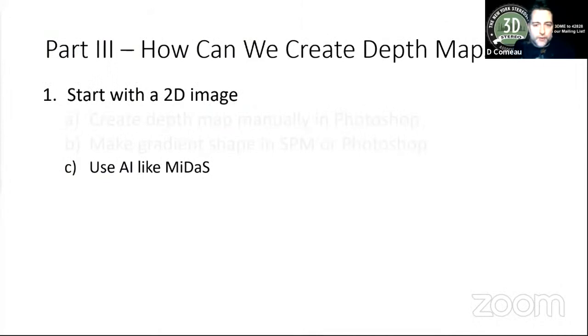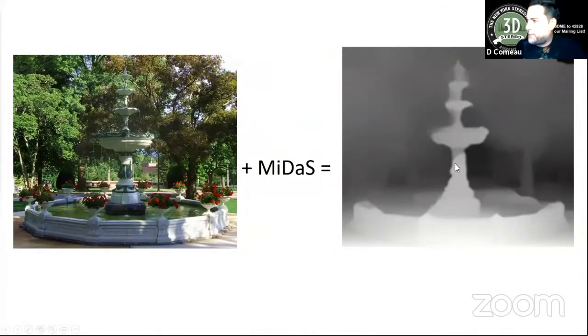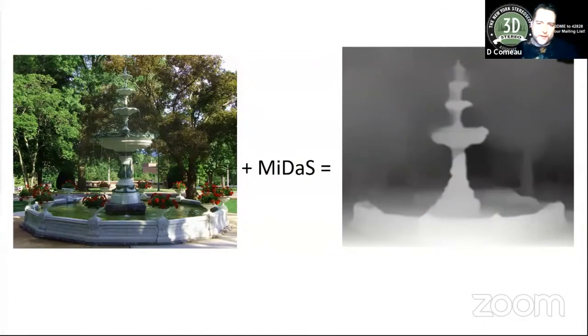And then the last way is to use some artificial intelligence. So I'm going to show you something I did with something called Midas. So this is taking just this 2D image, we run it through this Midas program, which is free, and it applies some machine learning to it, and it comes up with this decent depth map. It's got the fountain, it's missing those little things in the front, but it's a decent job for computer software, and it's getting better over time.